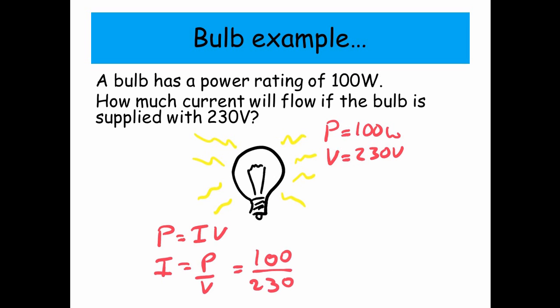Put the numbers in. 100 divided by 230. We get 0.43 amps.